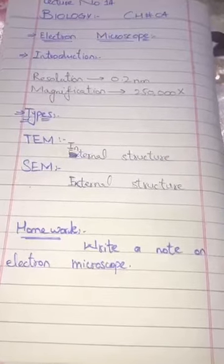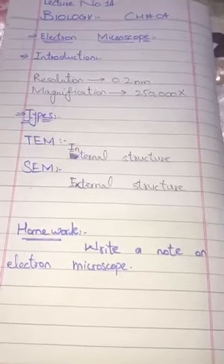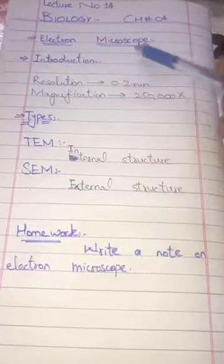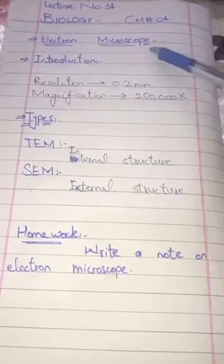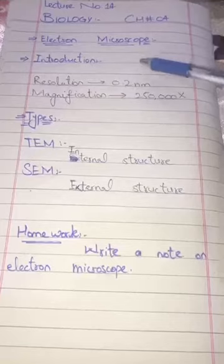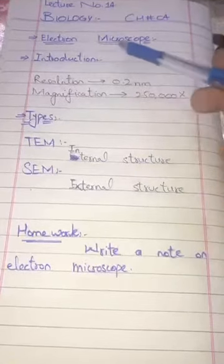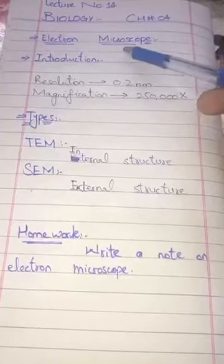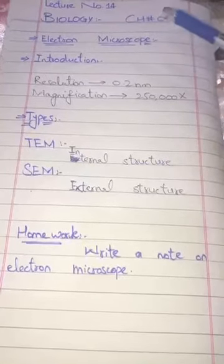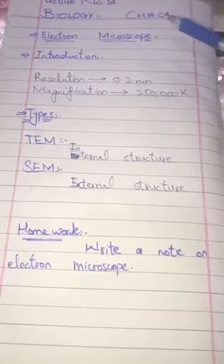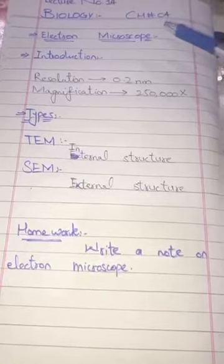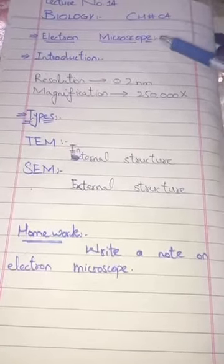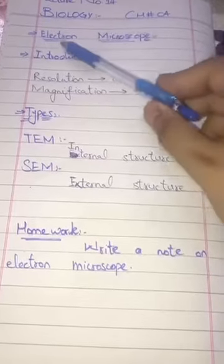We have studied the light microscope. Here is another type which is the electron microscope. The electron microscope is the advanced form of microscope in which we use the beam of electrons as the source, whereas the light microscope uses visible light as the source.